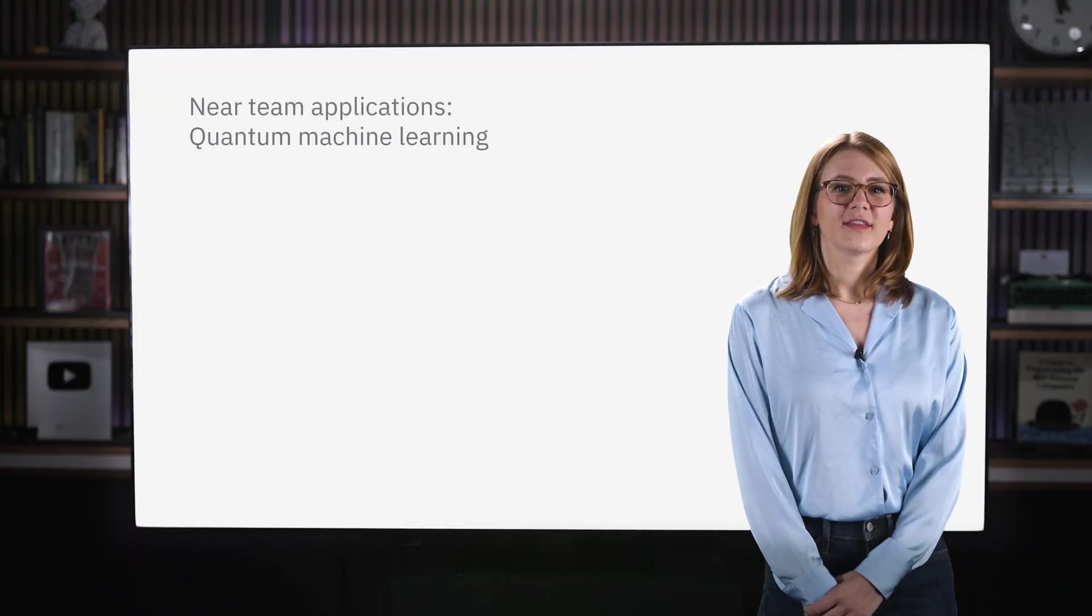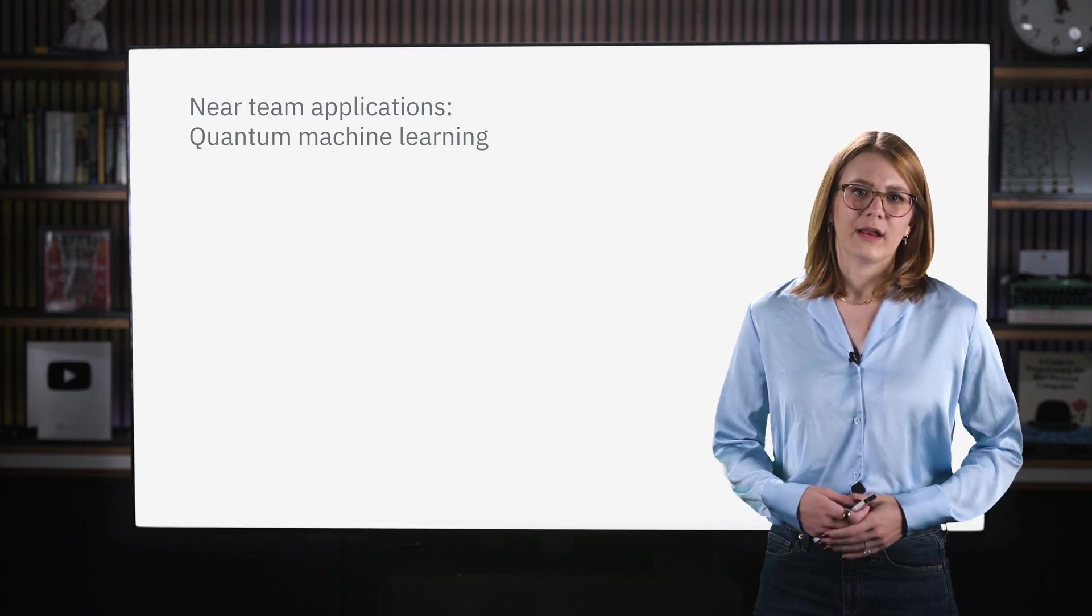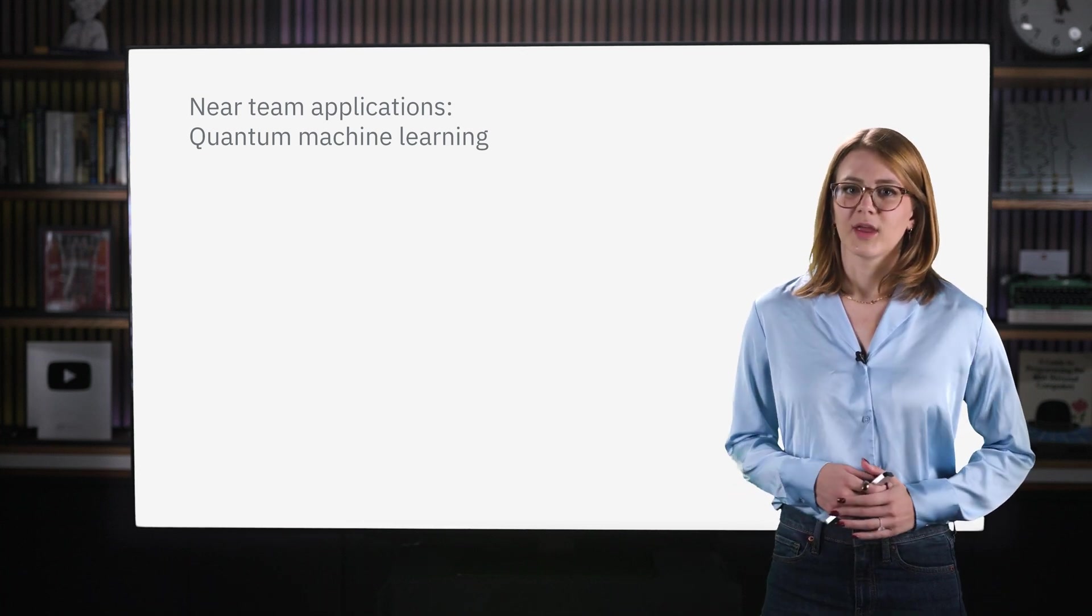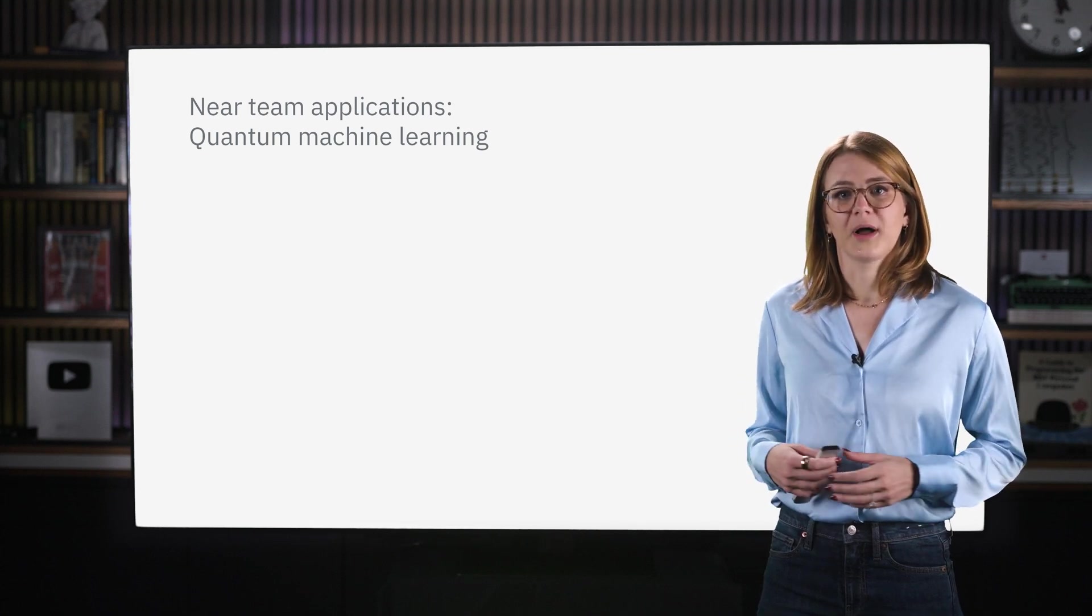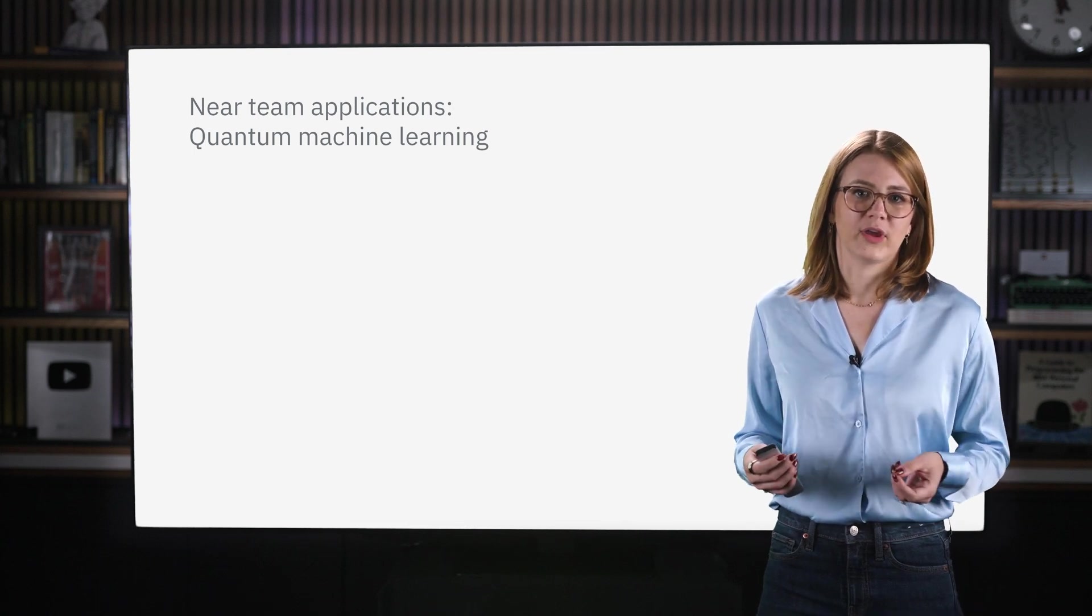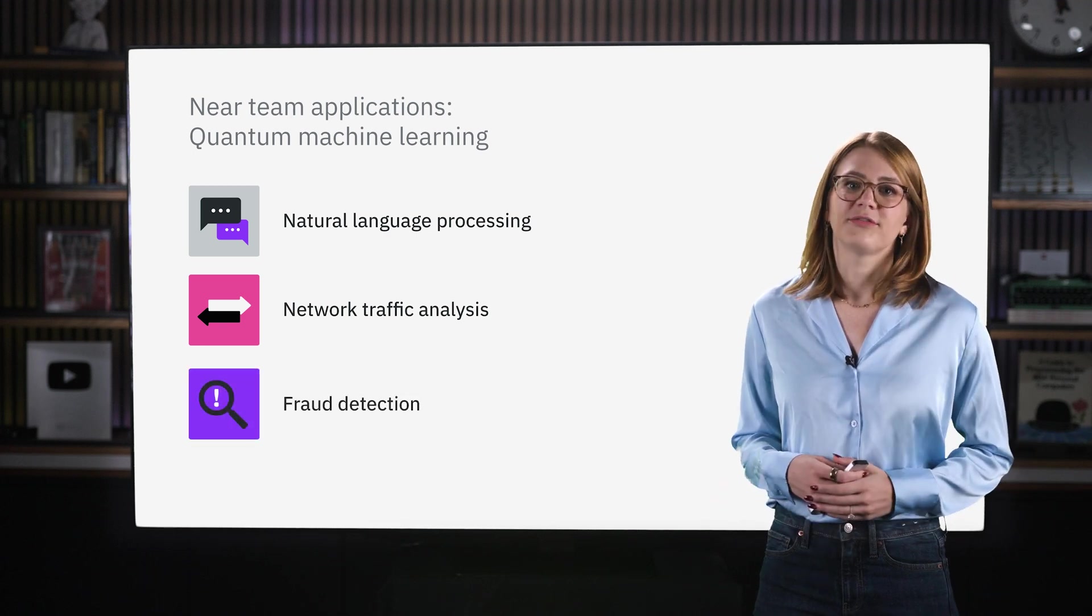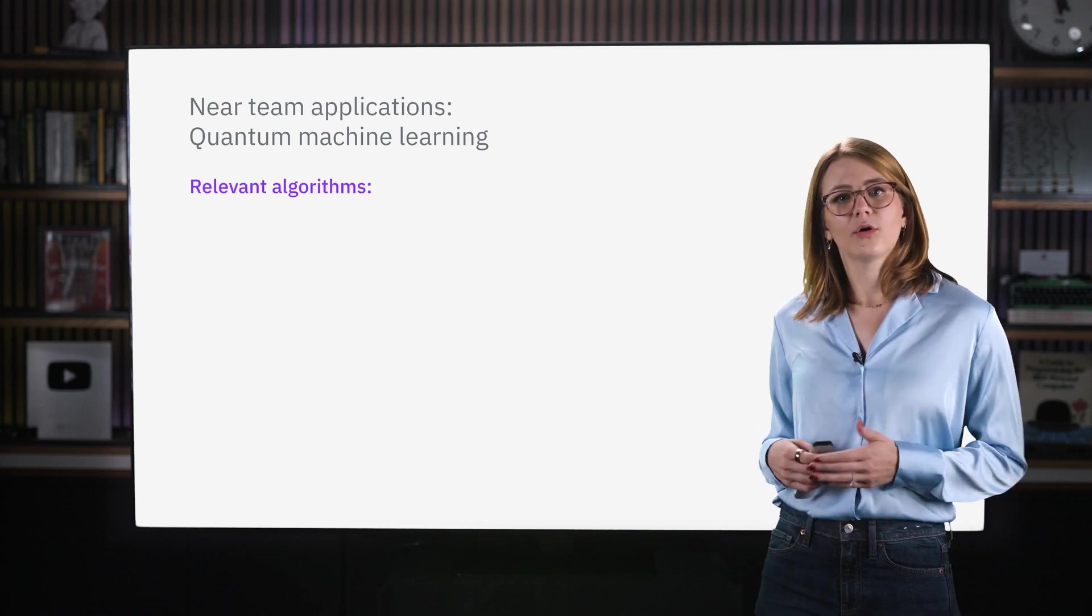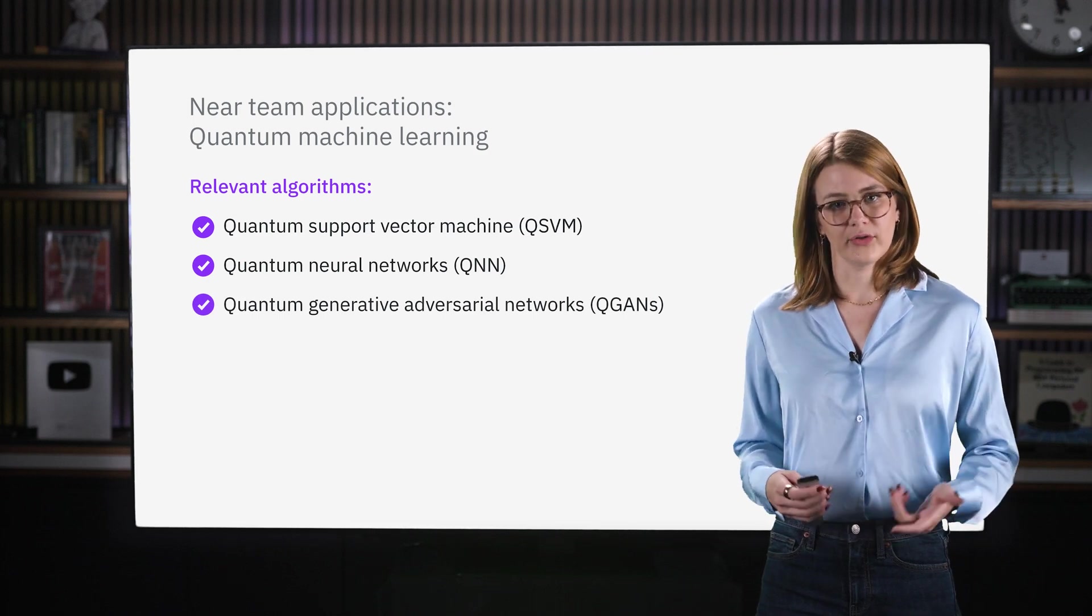Lastly, one area that there has been a lot of excitement for in the past few years is quantum machine learning. Now, I think it's fair to say that it looks like QML isn't going to happen as soon as simulation will, in all likelihood. But nevertheless, there are some impressive algorithms people are working on, consistently corresponding to some very important use cases. Some of these possible use cases are natural language processing, network traffic analysis, and even fraud detection in financial transactions. Relevant algorithms in this area are the quantum support vector machine, quantum neural networks, and quantum generative adversarial networks.